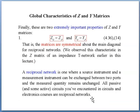The global characteristics of Z and Y matrices. There are two extremely important properties. The first is that Zij equals Zji and Yij equals Yji. This means that the matrices are symmetrical about the main diagonal for reciprocal networks. What does it mean by reciprocal network? It is a network where a source instrument and a measurement instrument can be exchanged between two ports and the measured quantity remains unchanged.